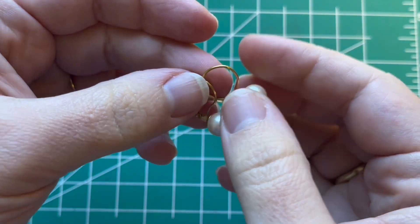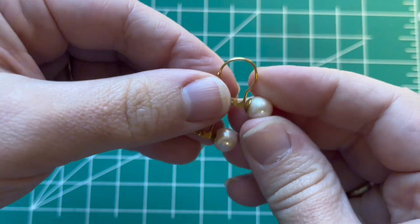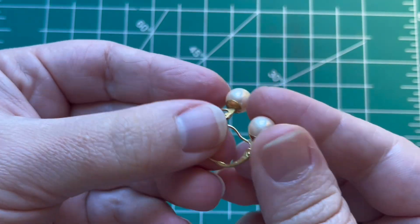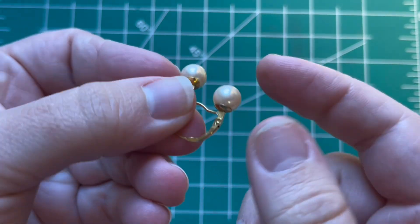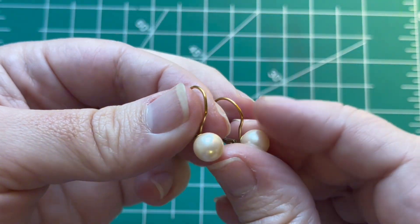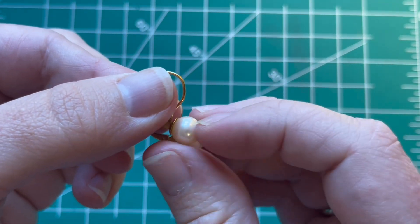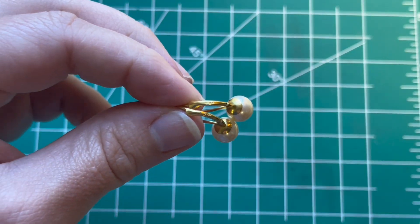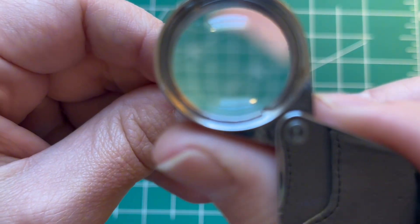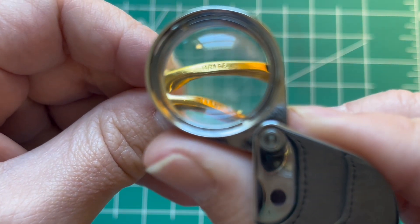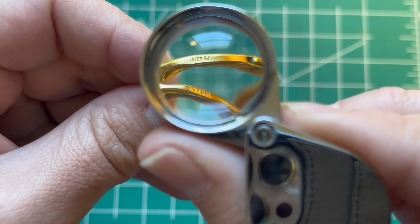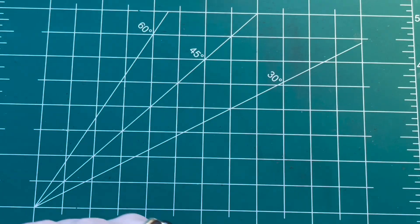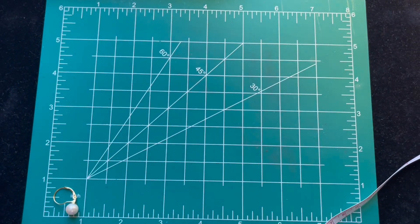Now we have some gold fill earrings. Just some lever back. These are faux pearls. And they screw on to the base there. They're not glued on or anything. So they're like an acrylic. They're very lightweight. So it's fourteen one twenty GF for gold fill.